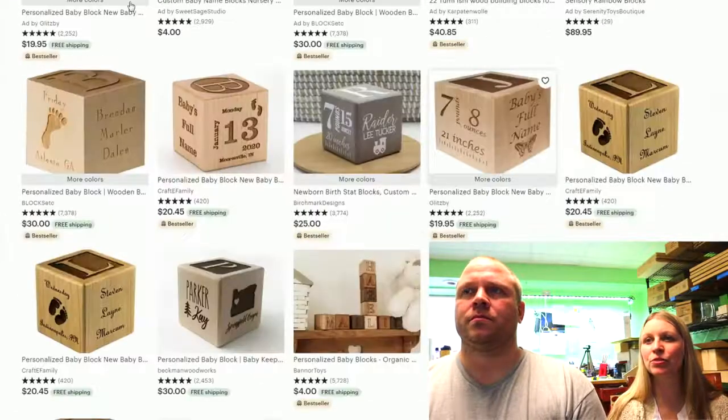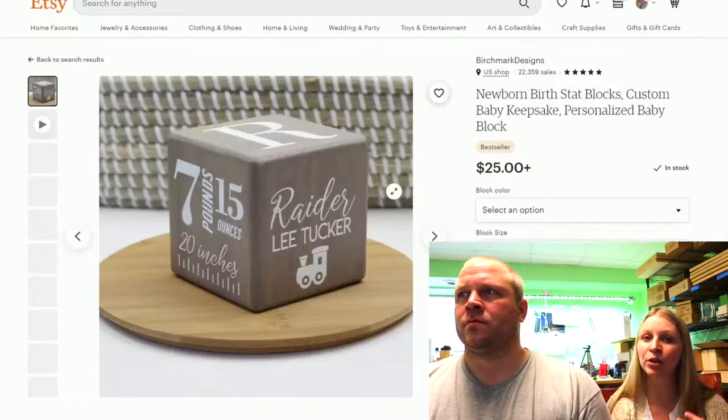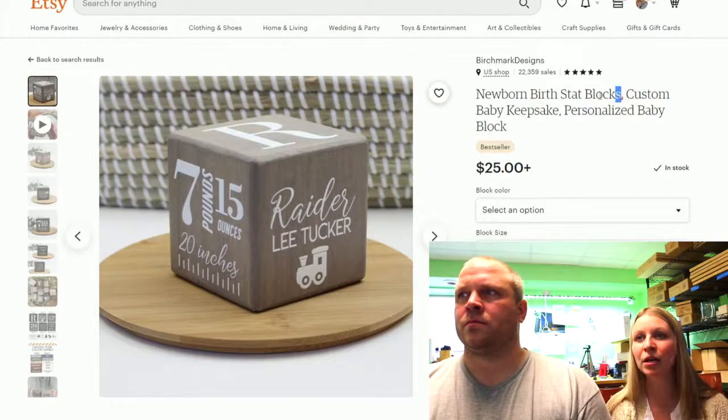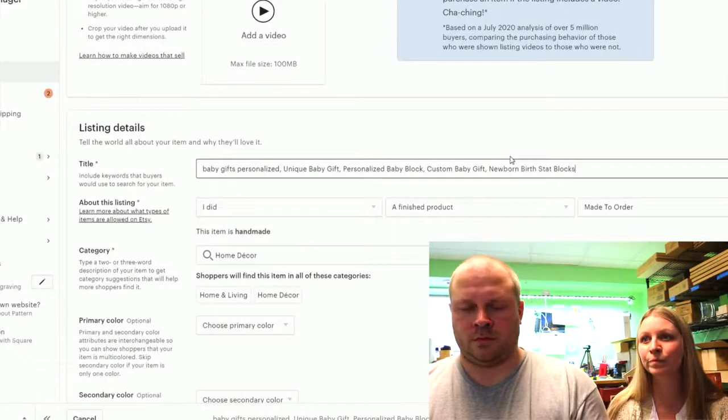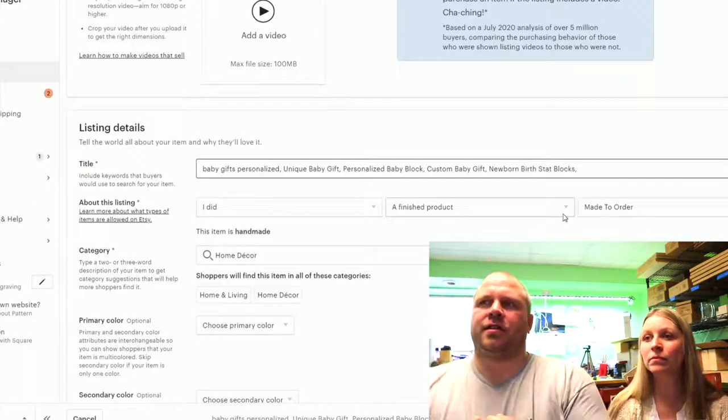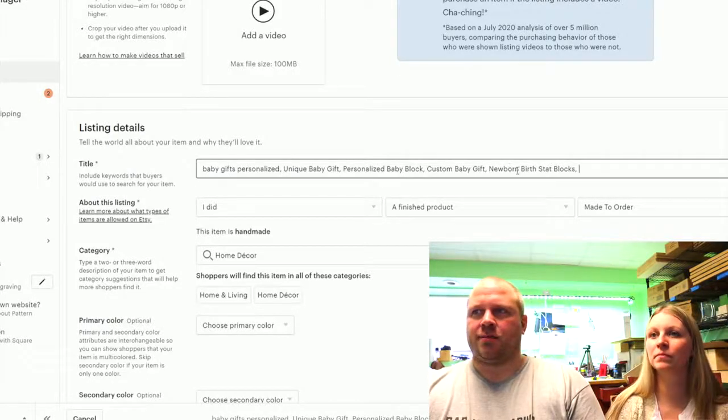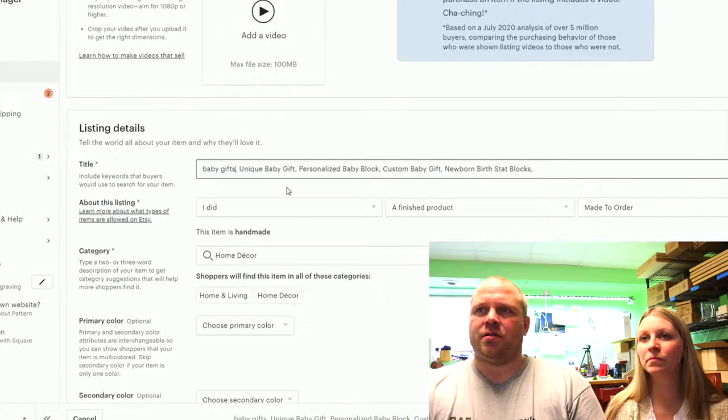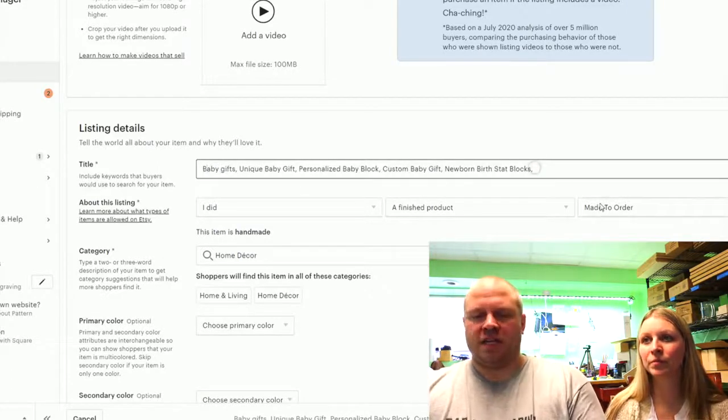I think the important thing to note is to not get stuck putting words in that are an exact description of it and also not to get stuck putting in the generic description because there's going to be people who are looking for your item. Like ours is a baby block who are specifically looking for a baby block. They know what they're looking for, but there's also people out there just looking for a baby gift and they don't know what that gift is yet. So you want to attract those people as well. And also try not to keep repeating yourself.